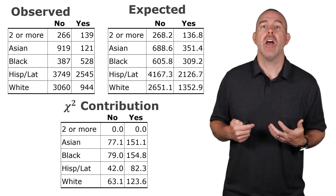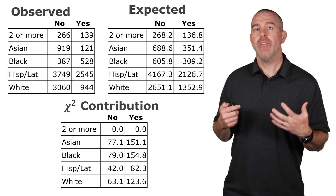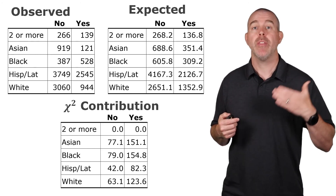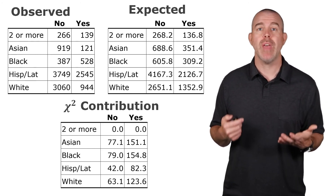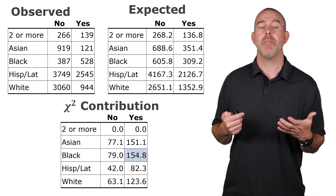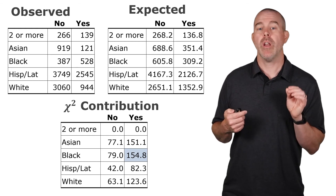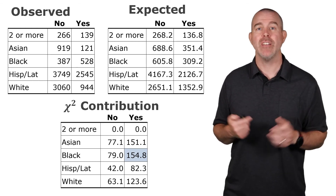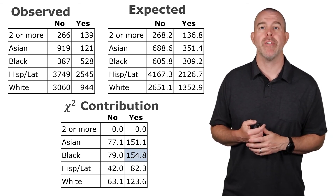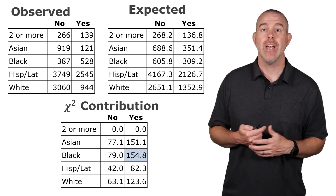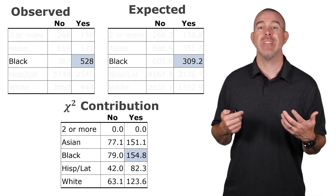Now there are a couple of other things you can see in StatCrunch. You can see the expected counts and also the chi-squared contribution — what that means is which of these cells contributed the most to that chi-squared value. For example, the cell under Black and yes has a chi-squared contribution of 154.8.